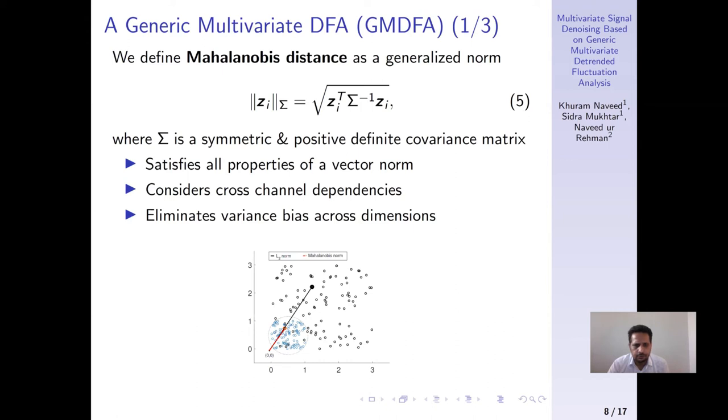This fact is also shown in the figure below where Mahalanobis distance shown using the red line is computed after all the points have been rescaled after variance normalization and consideration of the cross-channel dependencies into a unit circle.